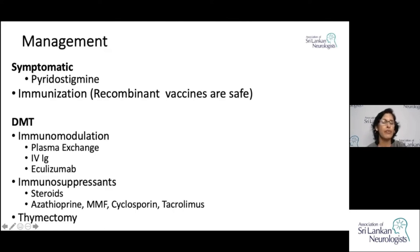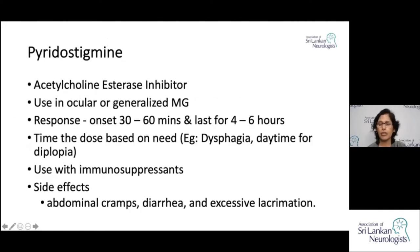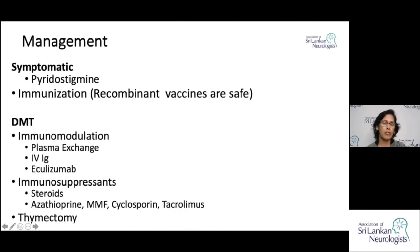For disease-modifying treatment you can use immunomodulation. Indications exist for plasma exchange, IVIG, and the monoclonal antibody eculizumab. Among immunosuppressants, more often we use either azathioprine or mycophenolate mofetil (MMF), but keep in mind there are others such as cyclosporine and tacrolimus.